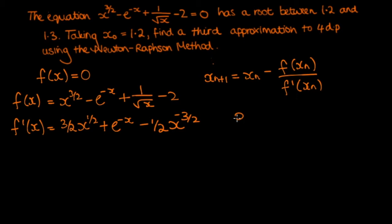So x1 equals x0 minus f of x0 over f prime of x0. And now let's plug in what we know. So x1 is equal to 1.2 minus f of 1.2. So what is f of 1.2? Well, it's this equation here, but where x is 1.2. So minus 1.2 to the power of 3 over 2 minus e to the minus 1.2 plus 1 over the square root of 1.2 minus 2.